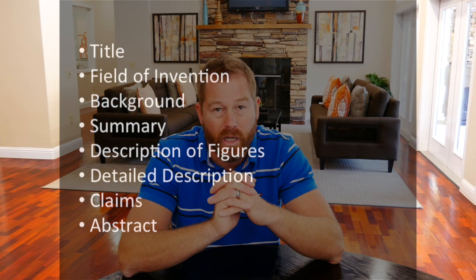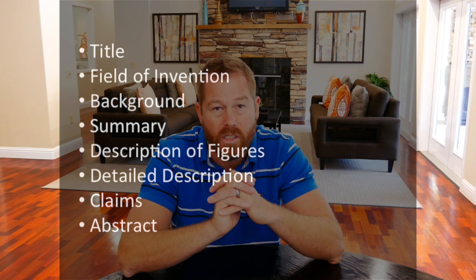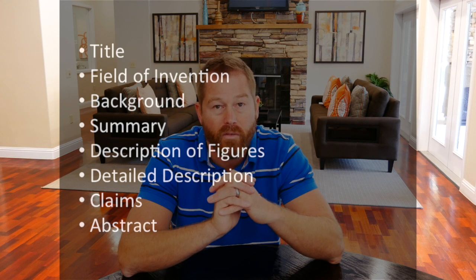I'm going to get into the searching you'll want to do in the next episode, but the search results, if they're relevant, would probably be described in the background. For starting in on the substance of describing your invention, the first section is the summary. The summary, in a nutshell, describes what is described in detail in the detailed description.